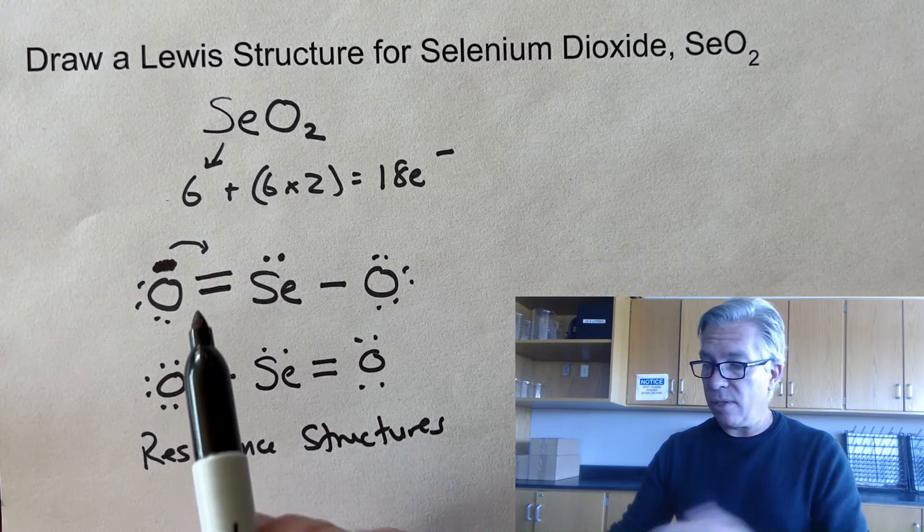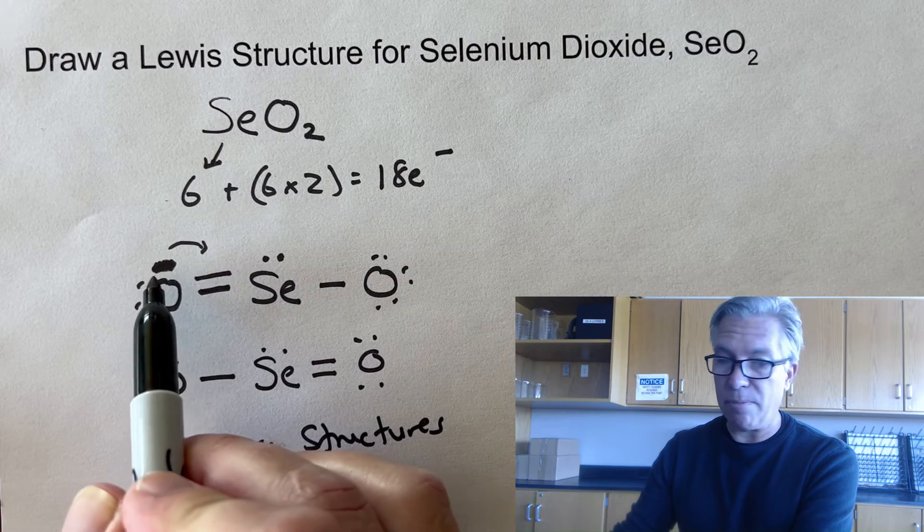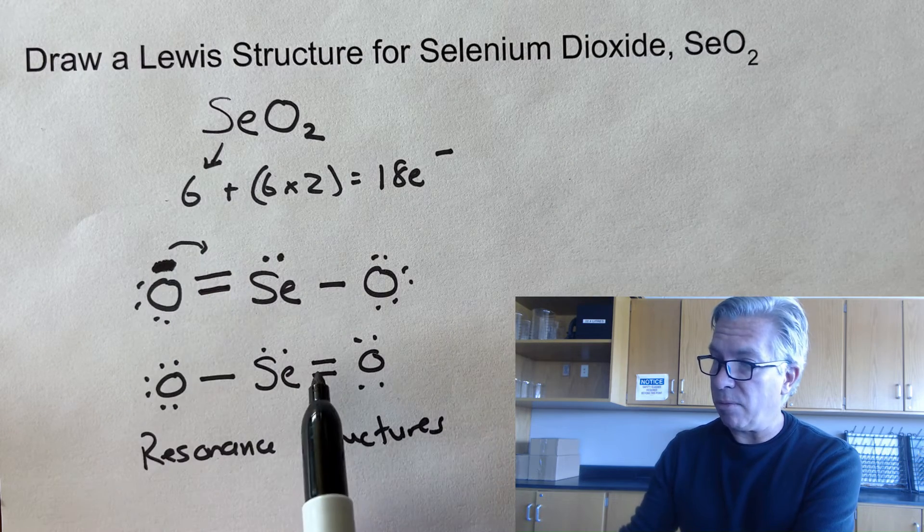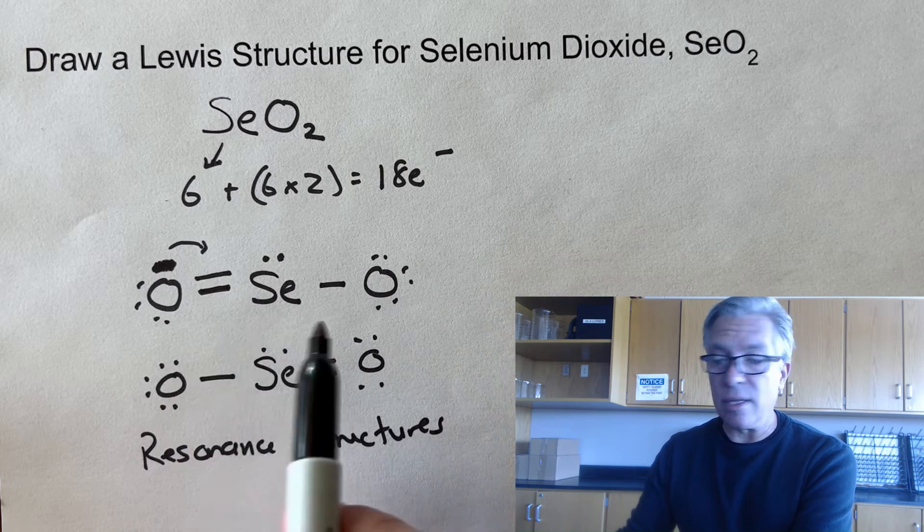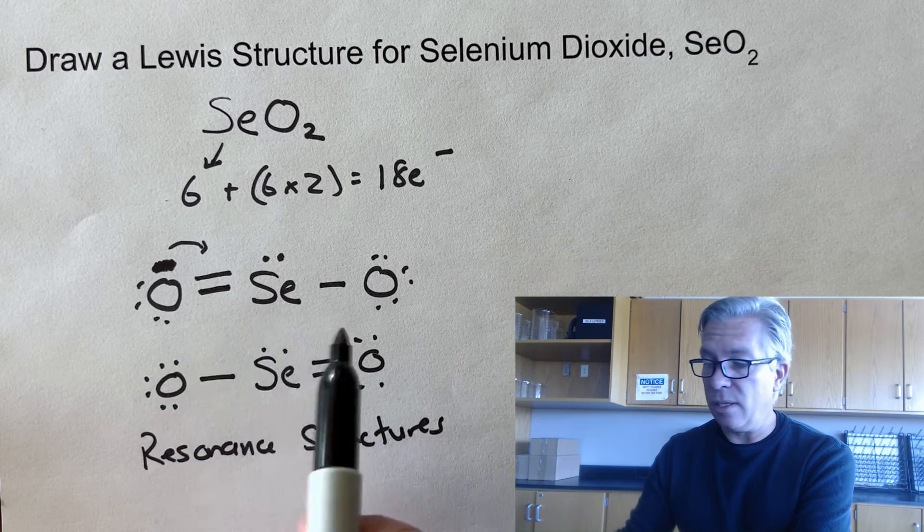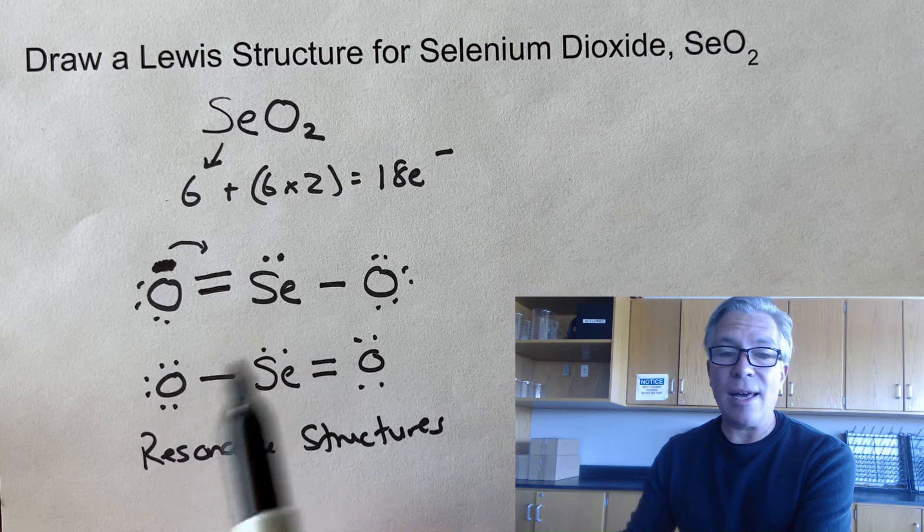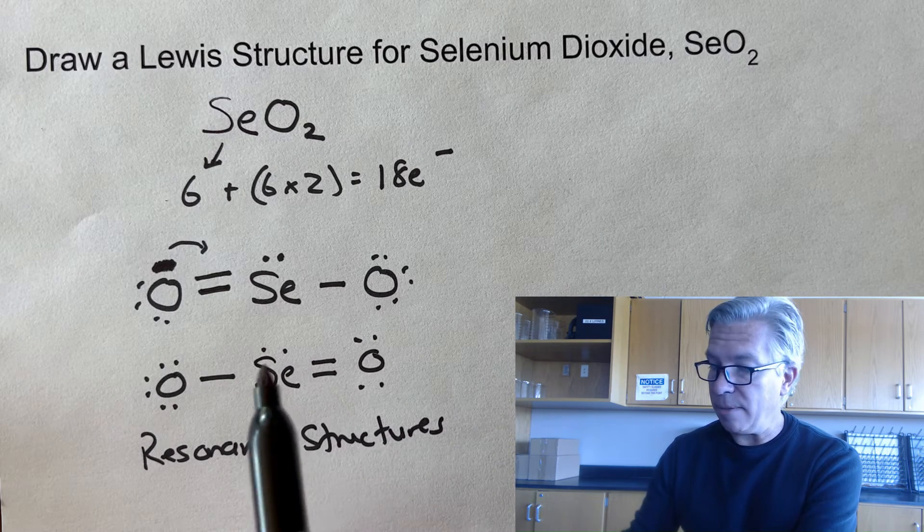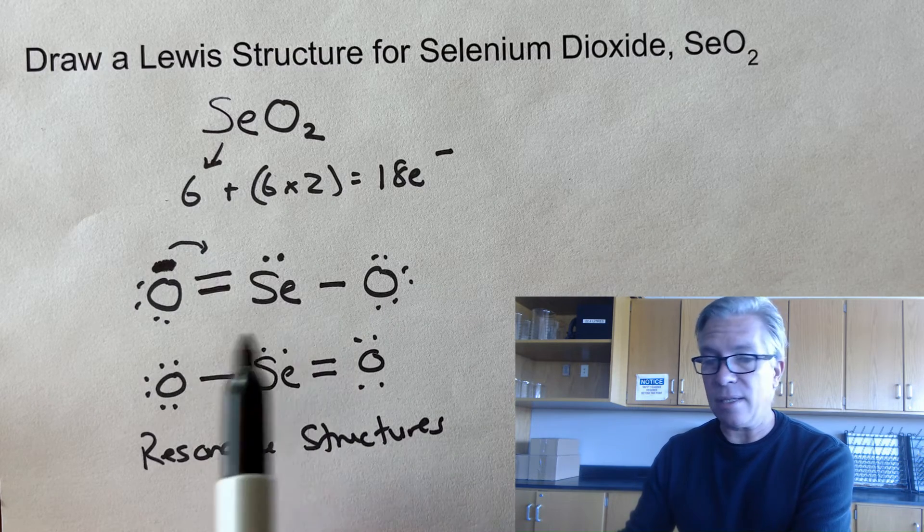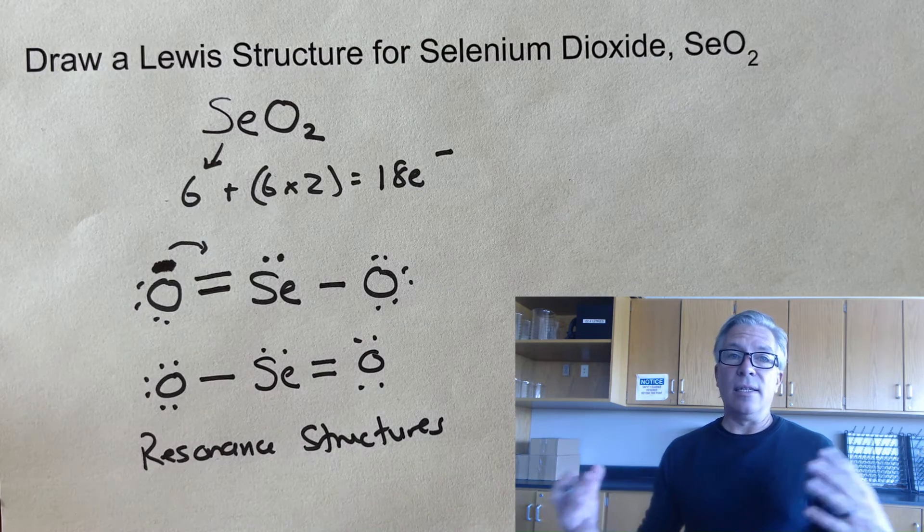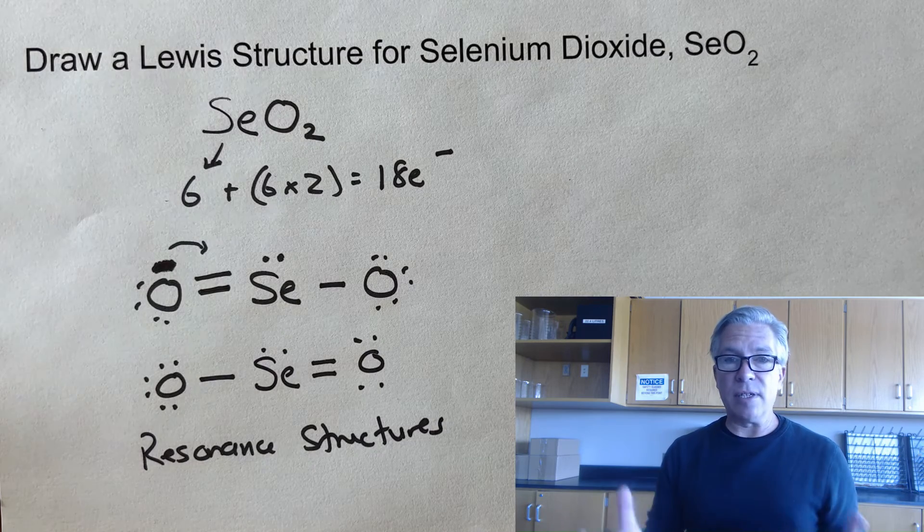They can move wherever they want to go. And so there's no reason why these can't jump back onto this oxygen and be replaced by these. And in fact, the selenium dioxide molecule will very likely be just swapping back and forth between which side the double bond is on thousands and thousands of times every second. And basically existing as sort of an average of both of those. It's oscillating. It's resonating. It's shifting back and forth.